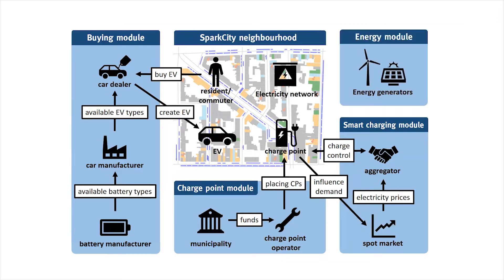The last module is the energy module. The goal of the energy module is to determine the electricity mix at a specific moment in time in the electricity network of the Spark CD neighborhood. This is important because we want to analyze the synergy between electricity production and electricity demand by electric vehicles. Energy generation is simulated by looking at different generator types and how much they produce in a specific year. We make assumptions about installed capacity expected in the future to predict what type of electricity will be available, and the energy generators are connected to the electricity network inside the Spark CD neighborhood.